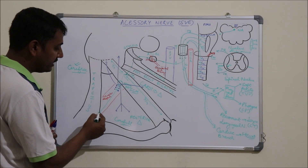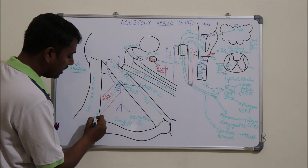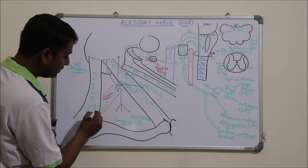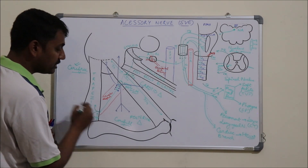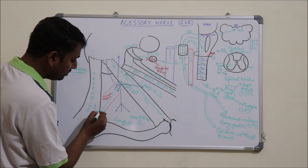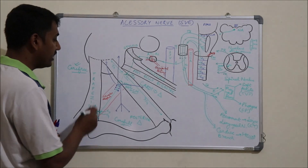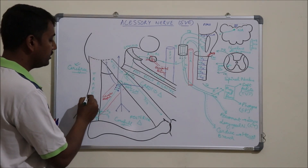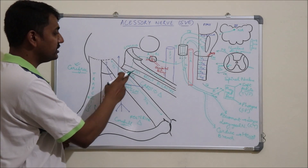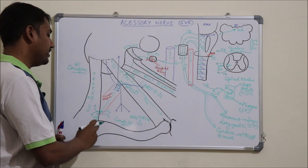After traversing the posterior triangle, the nerve enters the trapezius muscle just 5 cm above the clavicle and supplies it. Before supplying trapezius, it communicates with the C3 and C4 cervical nerves, which provide proprioceptive sensations from the trapezius muscle. So the spinal part of the accessory nerve supplies two muscles: the sternocleidomastoid and the trapezius.